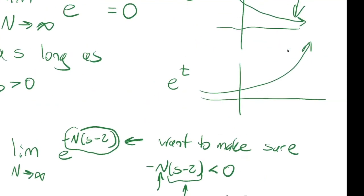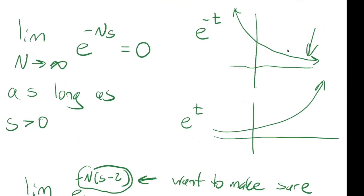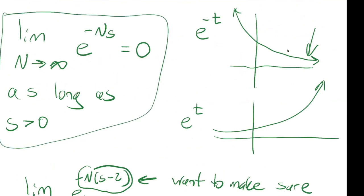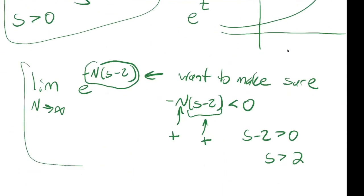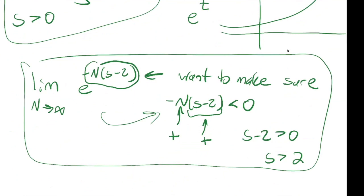For a simple exponential limit, there isn't much to say. For more complex ones, it's nice to include a little analysis. N is the thing going towards infinity — N is positive and approaching larger and larger positive numbers. That's why we know N is positive, and that's why we want to make sure the other piece is also positive.